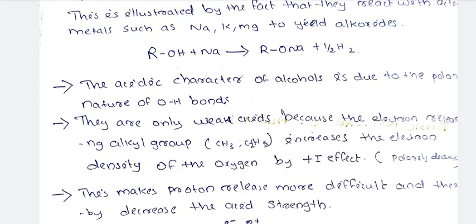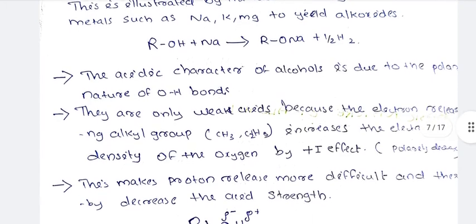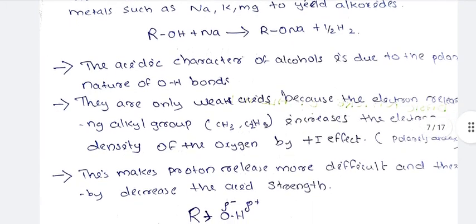Polar nature means that oxygen carries a partial negative charge and hydrogen carries a partial positive charge — they are charge-separated. The acidity character of alcohols is due to the polar nature of OH bonds. They are only weak acids.